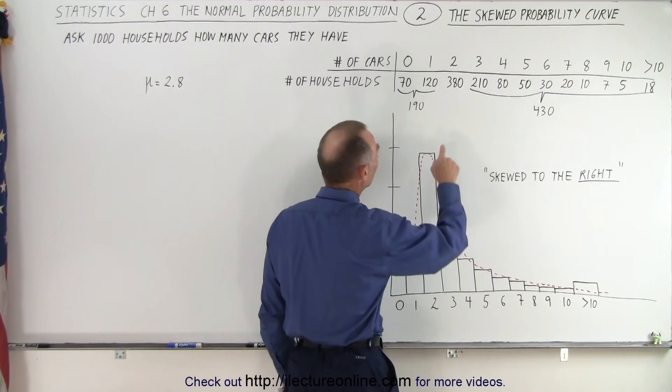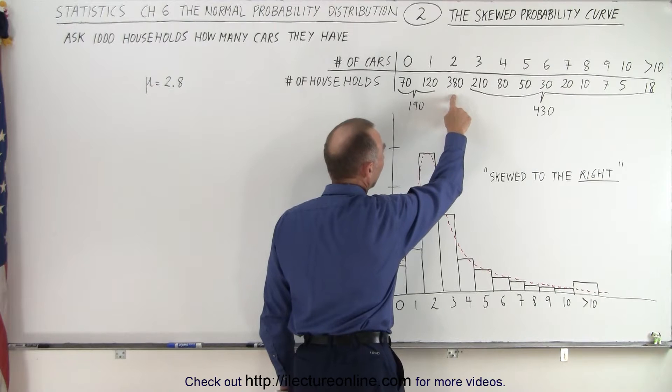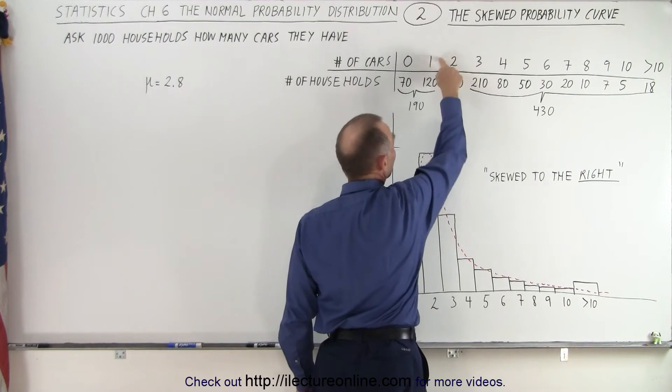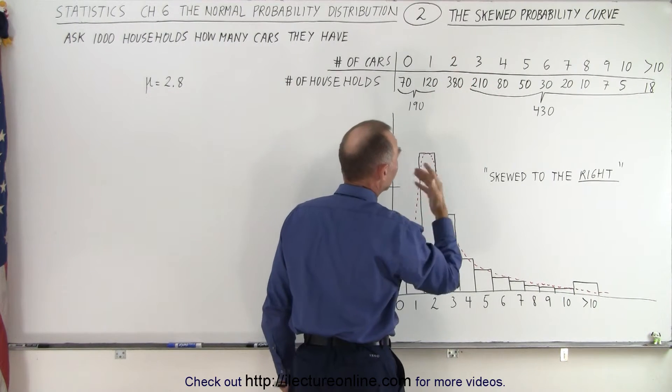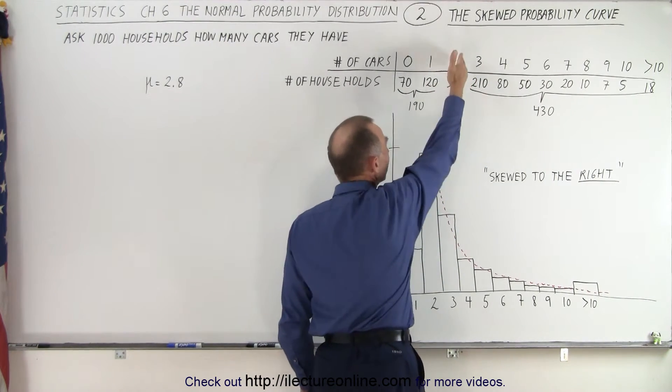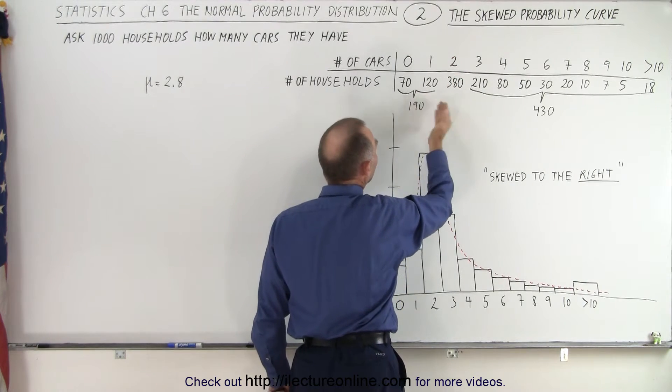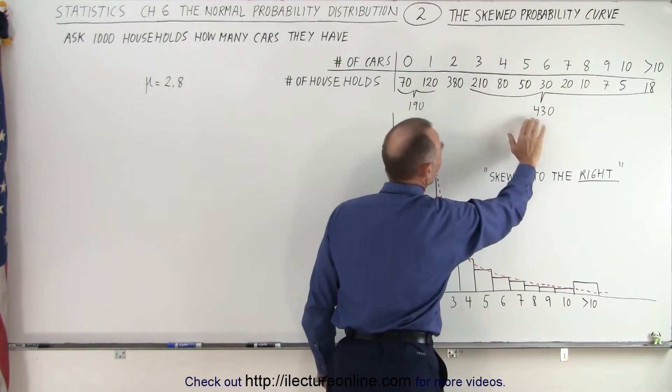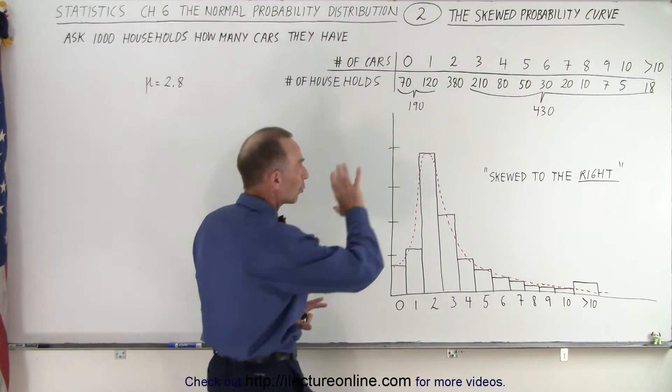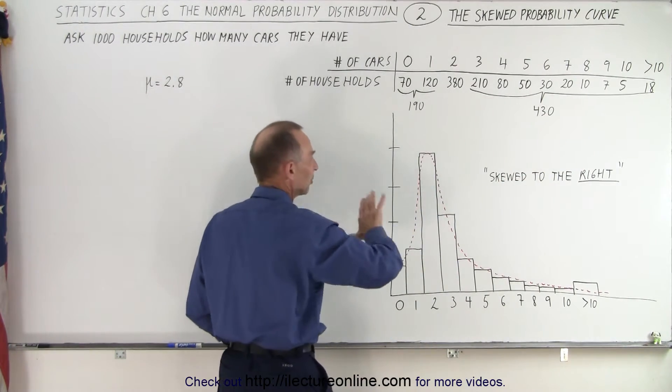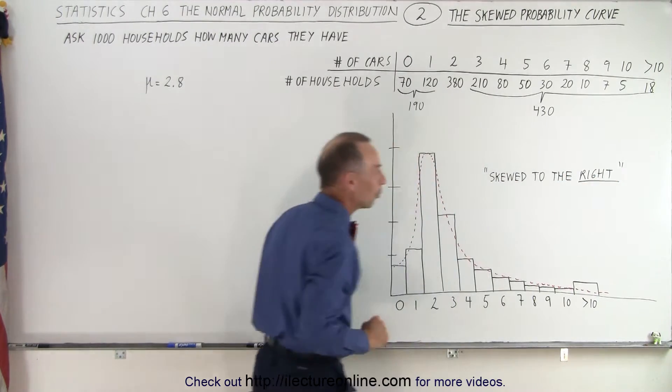Or, better yet, notice that the peak occurs at 380 households when x equals 2. There's only 190 points to the left and 430 points to the right. So there's way more values to the right of the maximum than to the left of the maximum, so we say that it's skewed to the right.